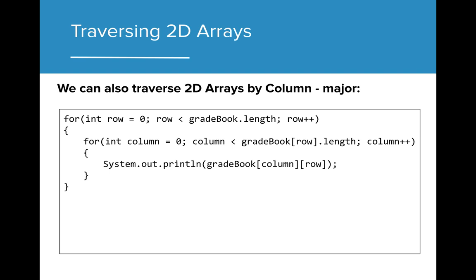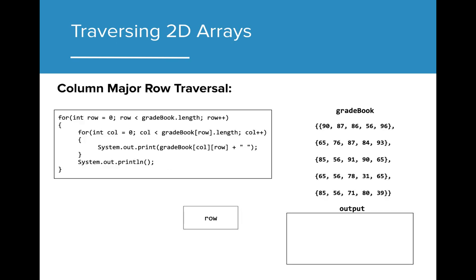The 2D traversal we just explored uses row major order. To access 2D arrays in column major order, we can make a small adjustment to the row major algorithm. If we switch the placement of row and column when accessing the gradebook, this will change the way that the 2D array is traversed. With this switch, the outer loop variable row now represents the column, and the inner loop variable column represents the row. As the column variable iterates, it moves through each row value, while the variable row stays on the same column value.